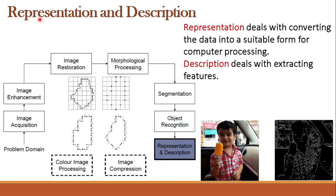The next stage is representation and description. Representation means showing and description means explaining. Representation and description involves converting image data into a suitable form for computer processing and extracting attributes or features. Representation can be of two types: boundary representation, which focuses on external shape characteristics such as corners, and regional representation, which focuses on internal properties such as textures and skeletal shape. Description or feature selection helps extract useful information from the boundary representation.